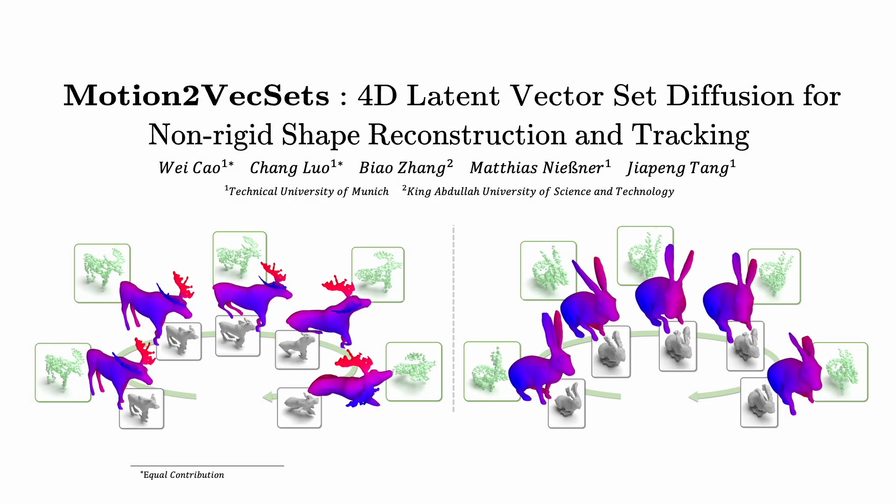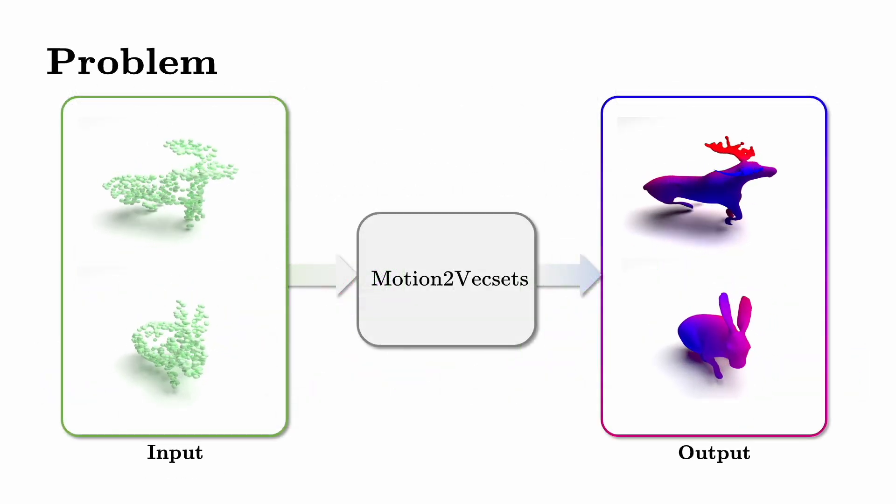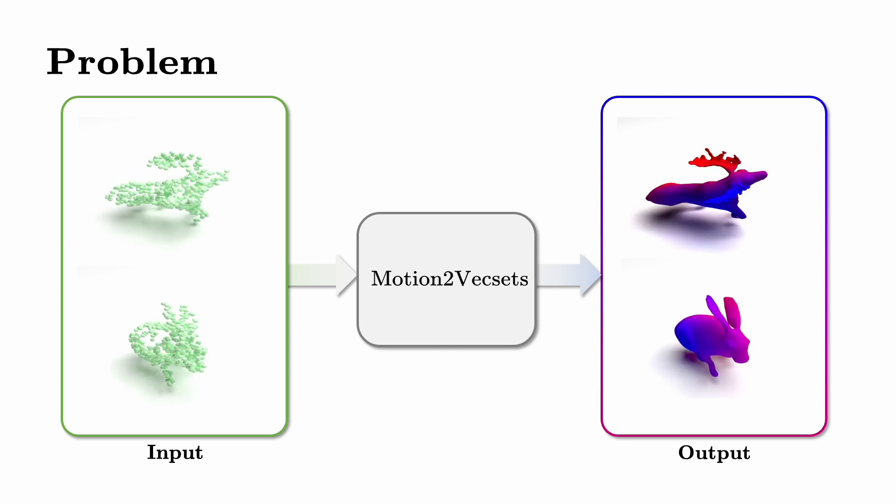We present Motion2VecSets, a 4D diffusion model designed for dynamic surface reconstruction from point cloud sequences. Given sequences of highly sparse and noisy point clouds, our method is capable of reconstructing high-quality 4D dynamic surfaces.